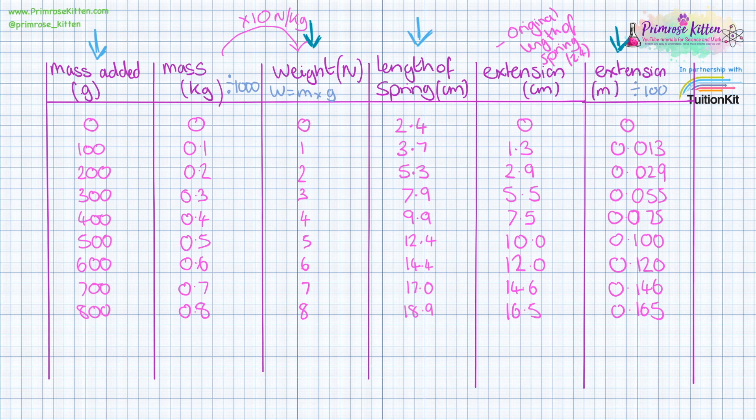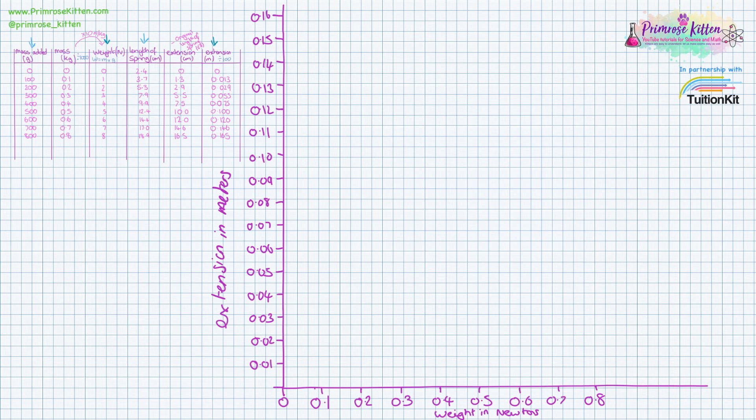Now after all of that, we can finally plot our graph, plotting weight in newtons against extension in meters. Now we have our graph drawn with weight in newtons versus extension in meters, and we are ready to plot weight versus extension.